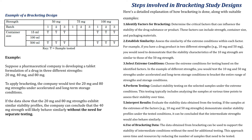This means they can use the data from extreme conditions to support the stability of the intermediates, saving time and resources by reducing the number of samples that need to be tested. For example, suppose a pharmaceutical company is developing a tablet formulation of a drug in three different strengths — 20mg, 40mg and 80mg. To apply bracketing, the company would test the 20mg and 80mg strengths under accelerated and long-term storage conditions. If the data show that both strengths exhibit similar stability profiles, the company can conclude that the 40mg strength will likely behave similarly without the need for separate testing.